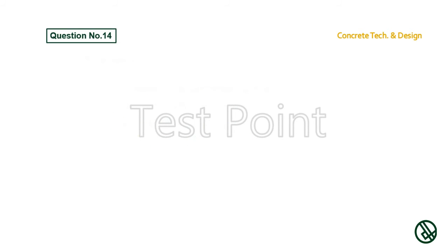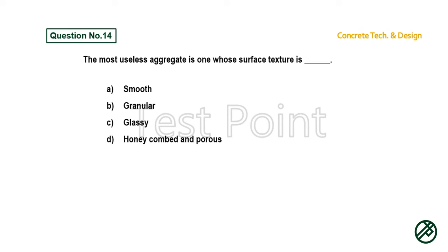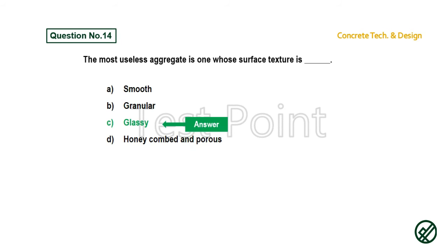Question number 14: The most useless aggregate is one whose surface texture is — Option A: Smooth. Option B: Granular. Option C: Glassy. Option D: Honey combed and porous. Answer is Option C: Glassy.